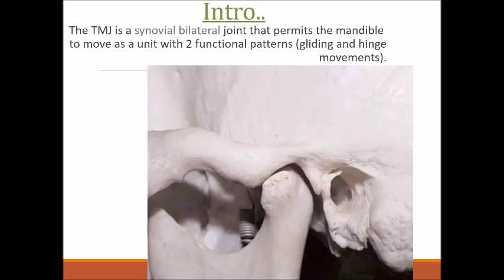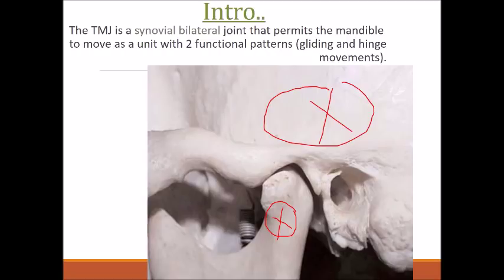What is the temporomandibular joint, or craniomandibular joint? It is an articulation between the skull and the mandible — particularly the glenoid fossa of the squamous part of the temporal bone with the head of the mandible. It is called the craniomandibular joint because it is between the cranium and the mandible, and the temporomandibular joint because it is between the temporal bone and the mandible. It is also a synovial joint because it contains synovial fluid.